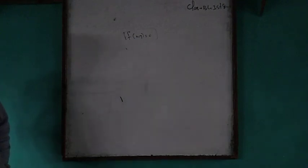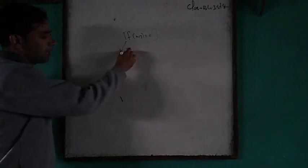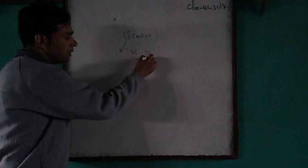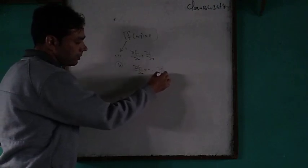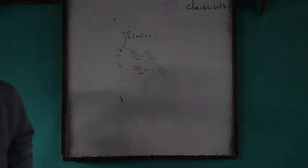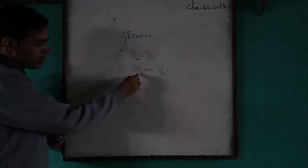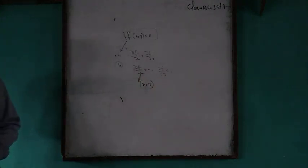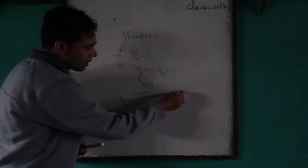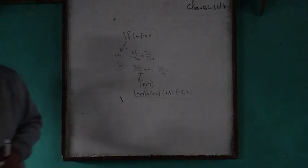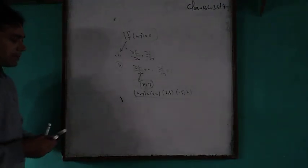Step 1: calculate the partial derivatives — del f by del x and del f by del y. Step 2: set these partial derivatives equal to zero — del f/del x = 0 and del f/del y = 0. Solve these equations simultaneously to get the values of x and y. Suppose we get solutions like (0,0), (2,3), (5,4) — these points are called double points or critical points.